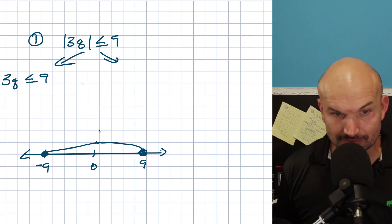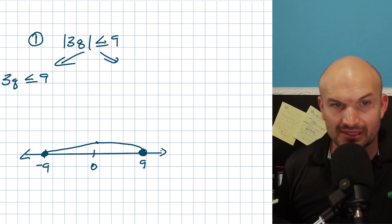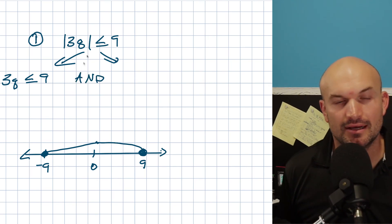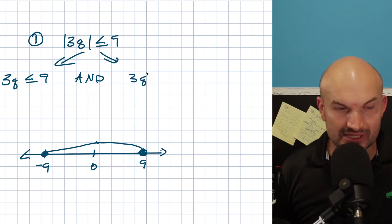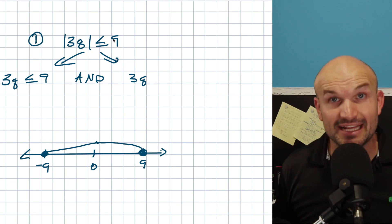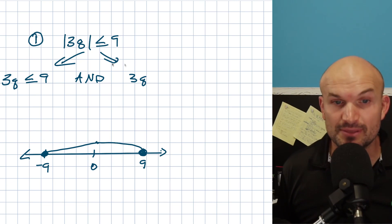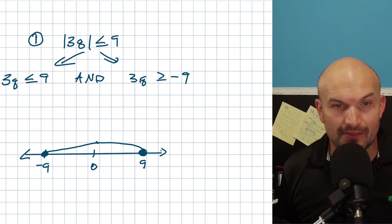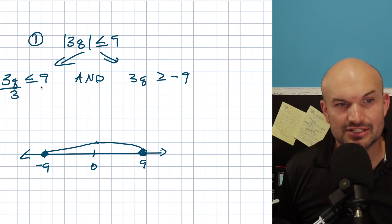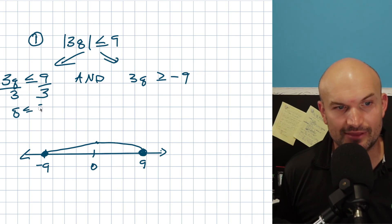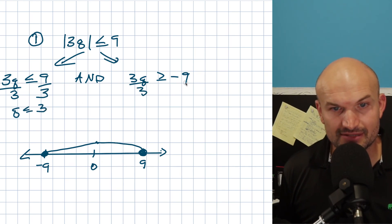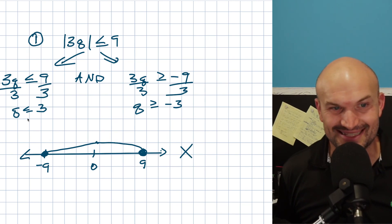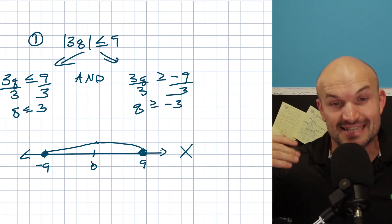Algebraically, we do our two cases. The positive case: 3q is less than or equal to 9. When you have less than or equal to, that is going to produce what we call an and inequality. So we say AND, and then we take the negative case — 3q has to be greater than or equal to negative 9. When you negate it to create that other case, make sure you flip the sign. So now dividing by 3: q is less than or equal to 3, and q is greater than or equal to negative 3.